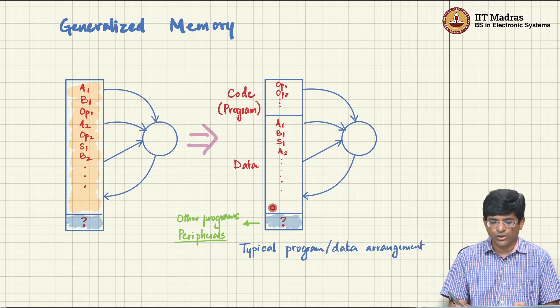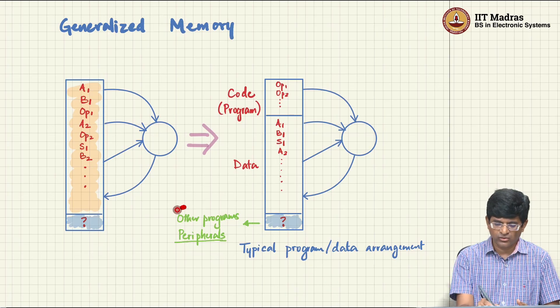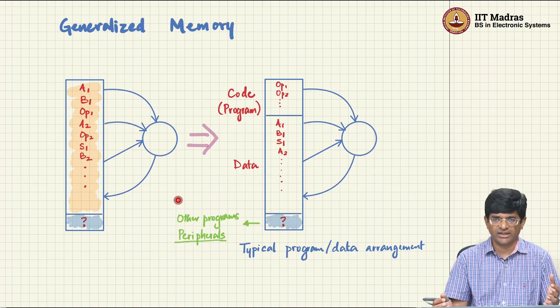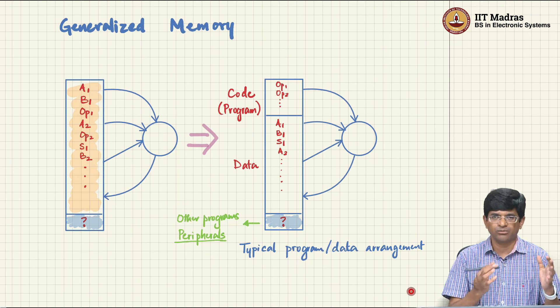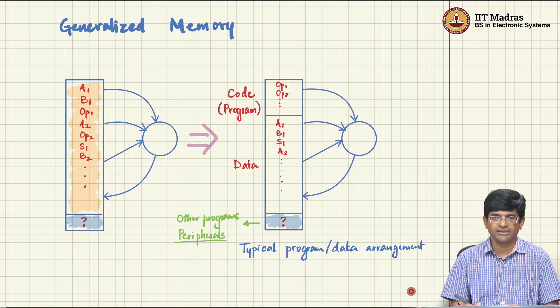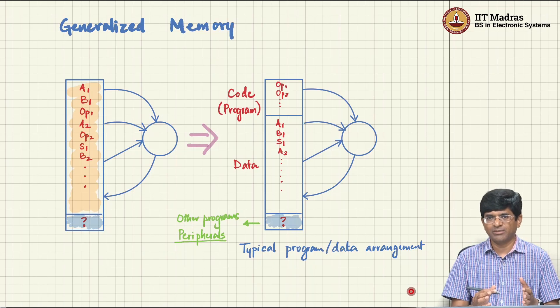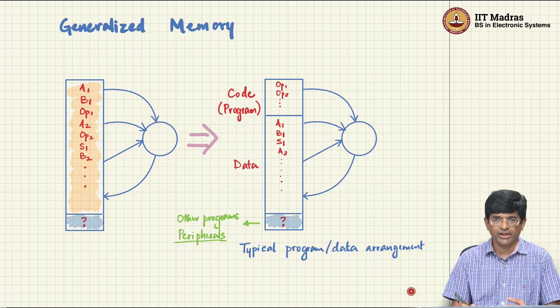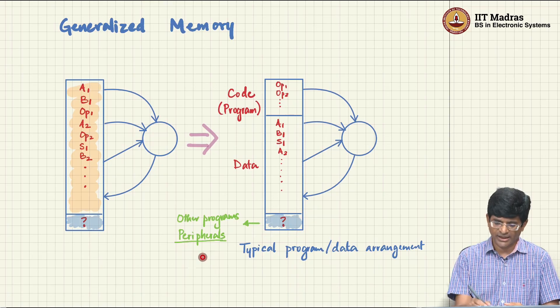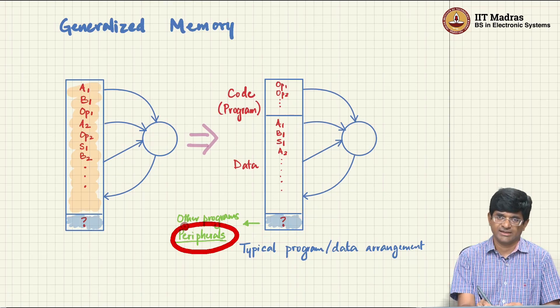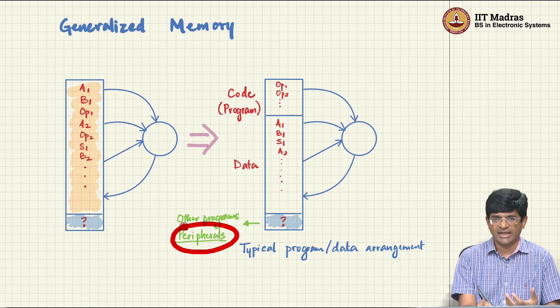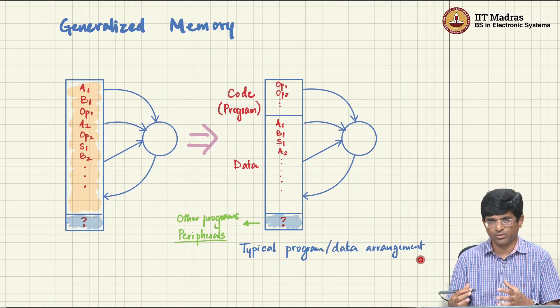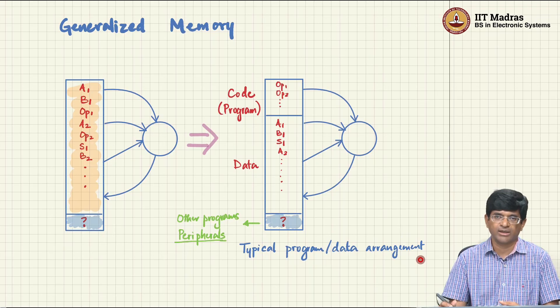Now coming back to this blob at the bottom out here, what could I put in over there? One answer of course is other programs, some other code and the corresponding data. And yes most of the time what happens is that when I have some memory associated with my computer, I find that most of that memory is basically divided up into chunks and there are many programs that are running in it more or less at the same time. And this idea of what exactly do we mean by at the same time is something that we need to think about and understand a little bit better. But there is another important use of this memory space that I have out here which is for the use of something called peripherals. Once again something that we will be looking at in a lot more detail as we move forward. So this kind of arrangement out here where I have the code sort of grouped together and the data grouped together into another bunch is typical. It is common and that is more or less how most programs are constructed.